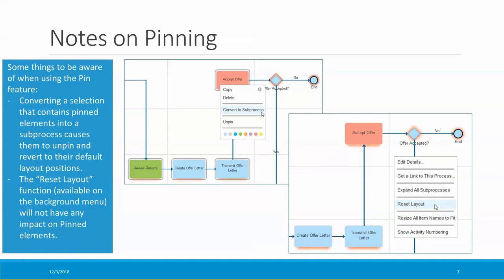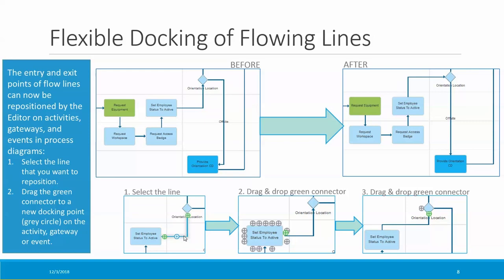Now let's take a look at how you can reposition where the flow lines enter and exit activities, gateways, and events in your process diagrams. Up until now you had to live with the default positioning of these flow lines, but now you can choose where to dock the lines. Here's an example: on the upper left is a diagram I want to make more readable by changing where the flow lines come in and out of the 'set employee status to active' activity and the orientation location gateway. I want my diagram to look like the one in the after picture on the upper right. So in step one, I select the line that I want to reposition — it becomes highlighted and shows a green node where it connects with the activity in the gateway.